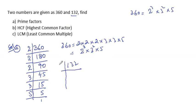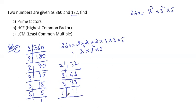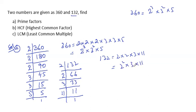I divide 132 by 2: 132 ÷ 2 = 66. 66 can be divided by 2: 66 ÷ 2 = 33. 33 can be divided by 3: 33 ÷ 3 = 11. 11 is a prime number, so I divide by 11. So 132 = 2 × 2 × 3 × 11, which in index form is 2² × 3 × 11.